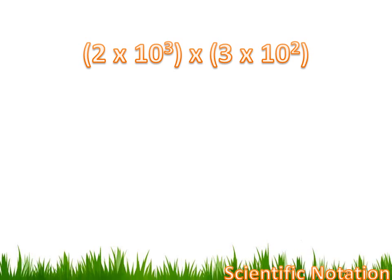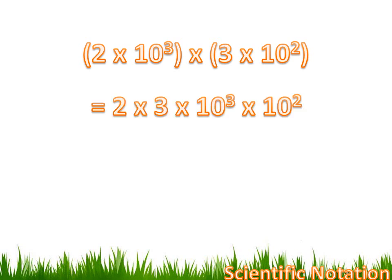One last thing to discuss. What if we want to multiply two numbers that are in scientific notation? For instance, 2 times 10 to the third times 3 times 10 to the second. Well, I'd want to regroup those. I'd want to change that to 2 times 3 times 10 to the third times 10 to the second.